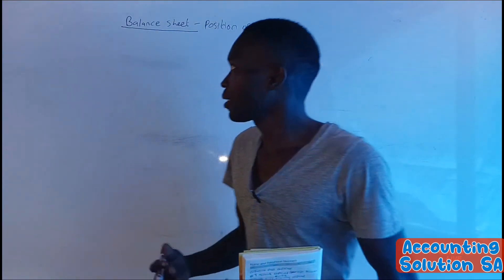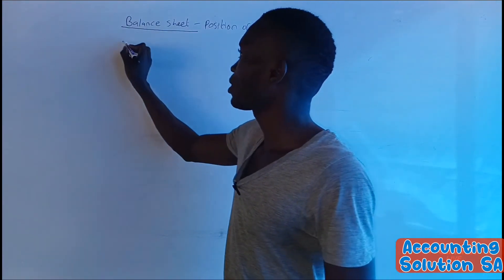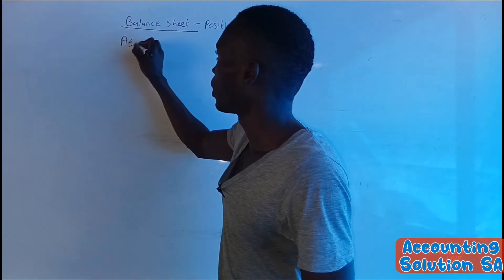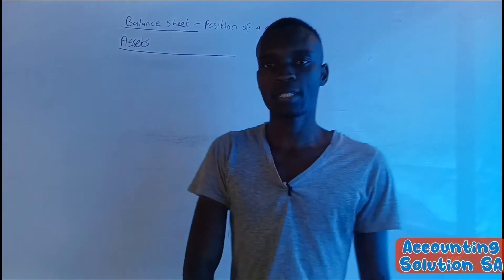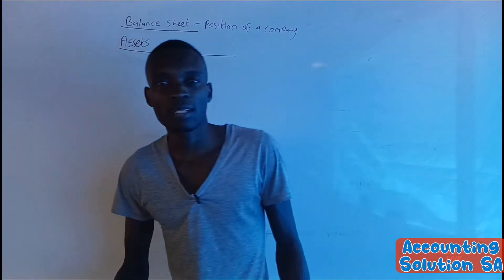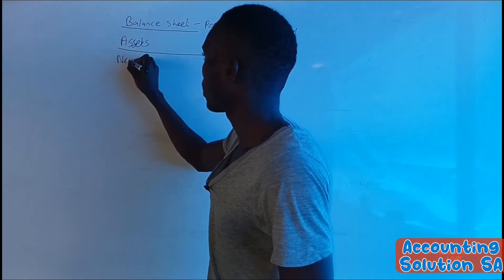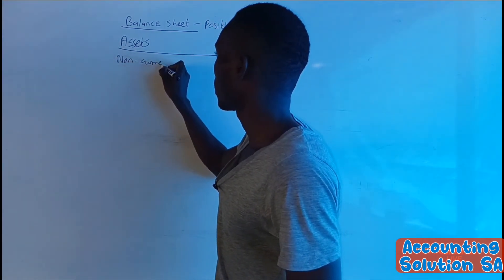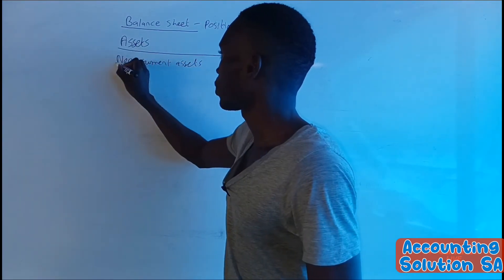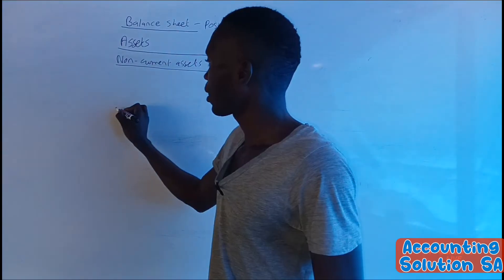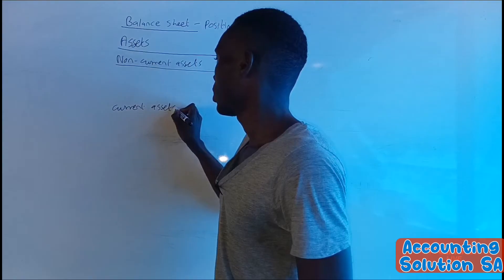Now let's check how the balance sheet looks like. First, you must know that the balance sheet starts from asset account section. Then the asset account section is divided into two subsections, which we have number one, non-current asset, and we also have current asset.